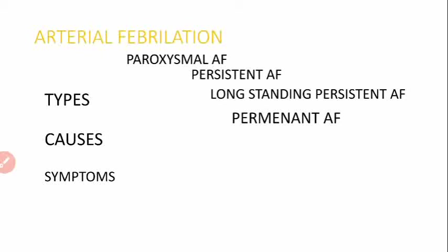Doctors may give medicine to treat atrial fibrillation in an early phase. The second arrhythmia is atrial flutter, which is similar to atrial fibrillation, but the rhythm in atrial flutter is more organized, and the heart rate is faster — around 200 to 300 beats per minute.